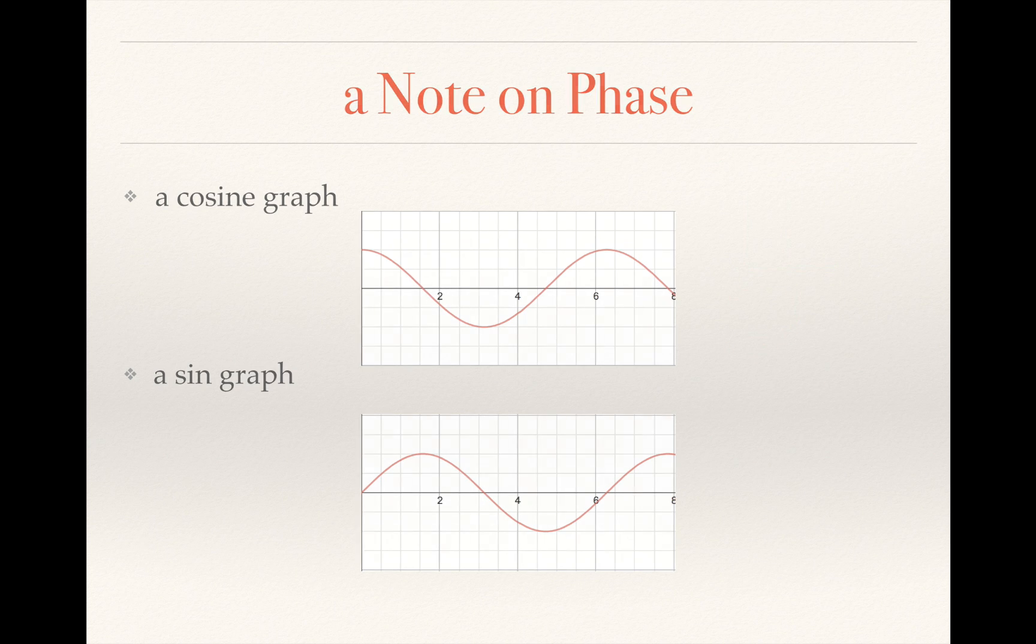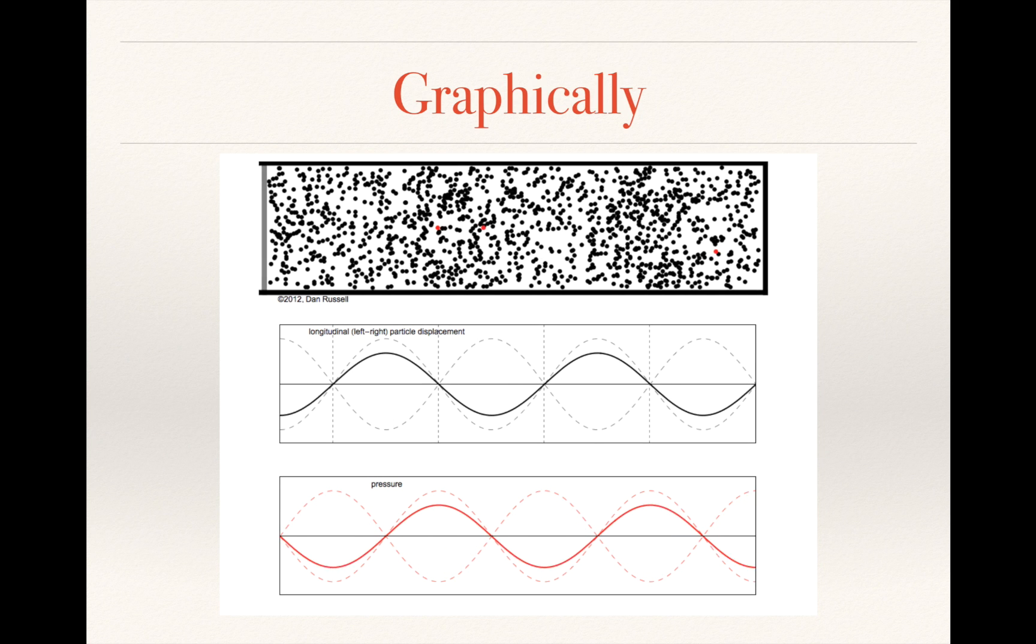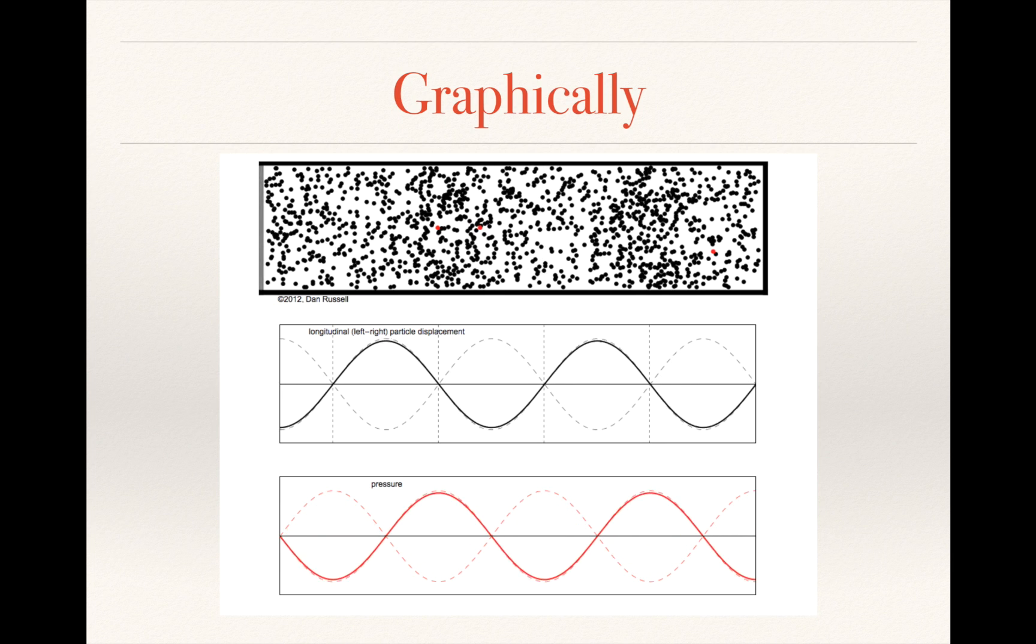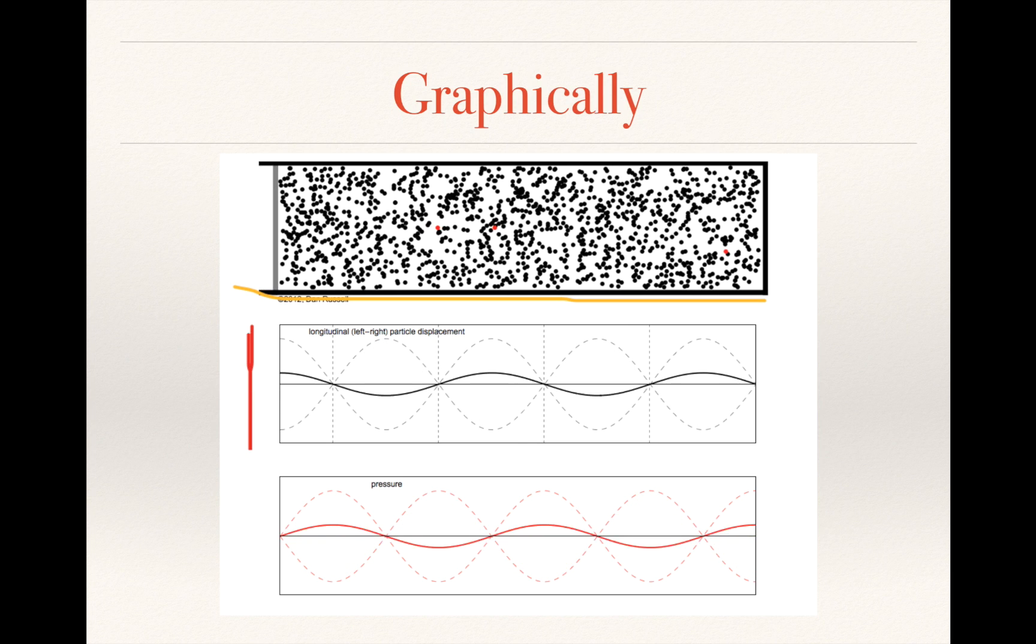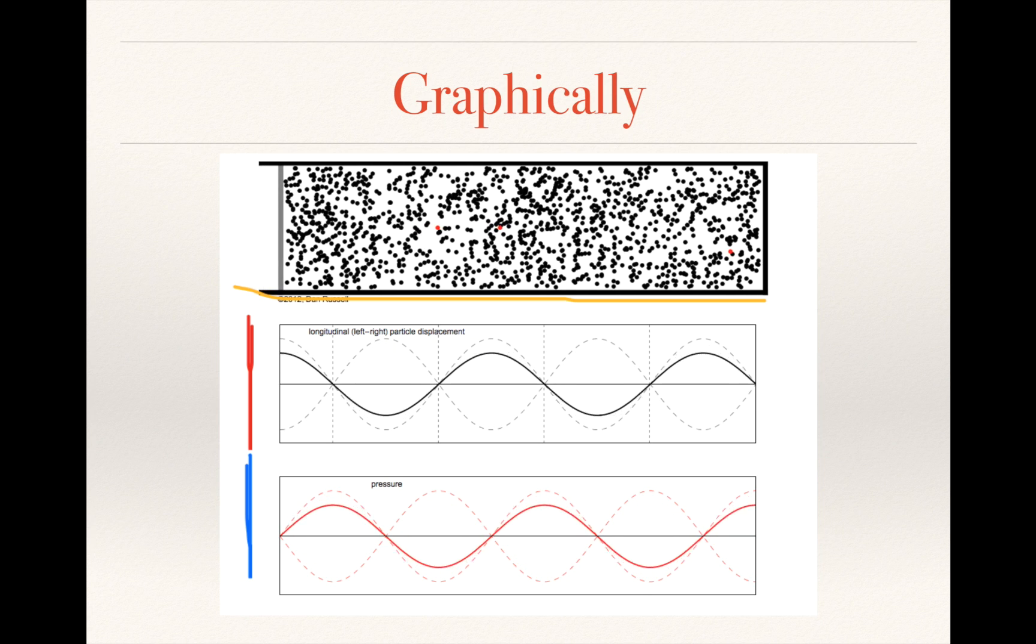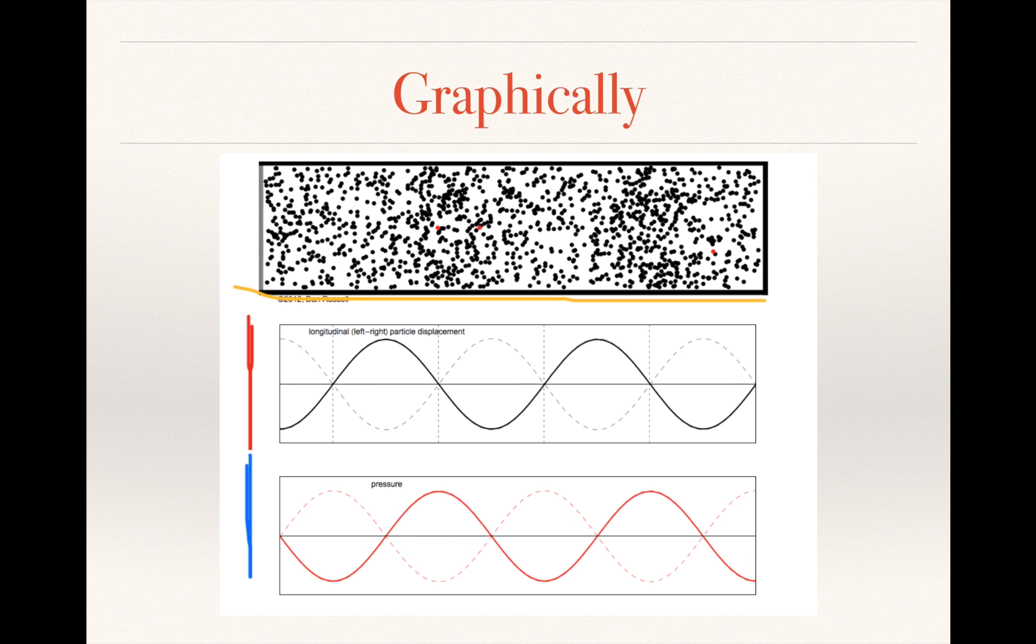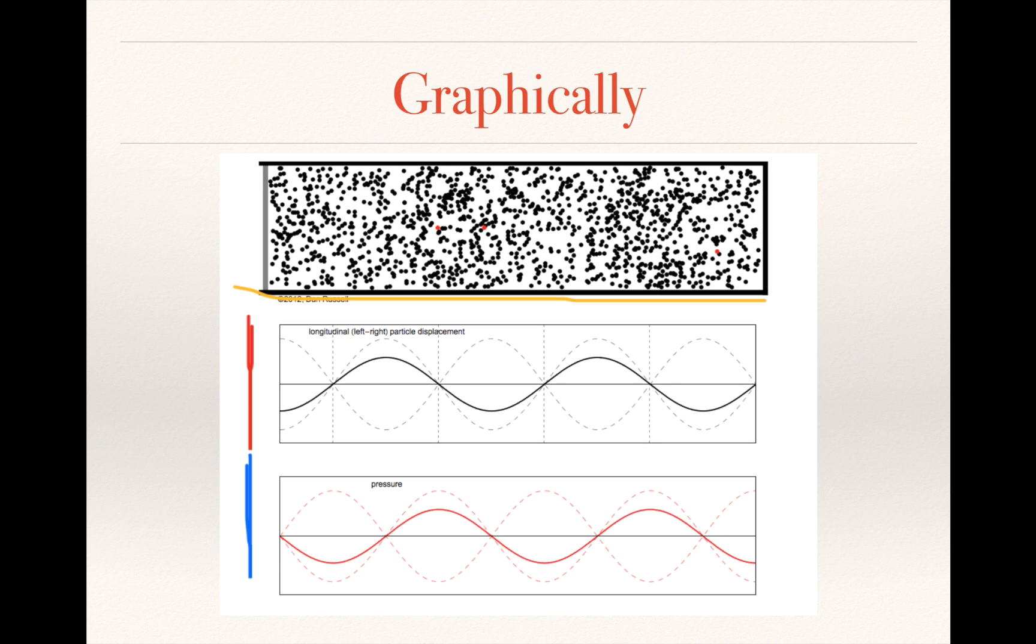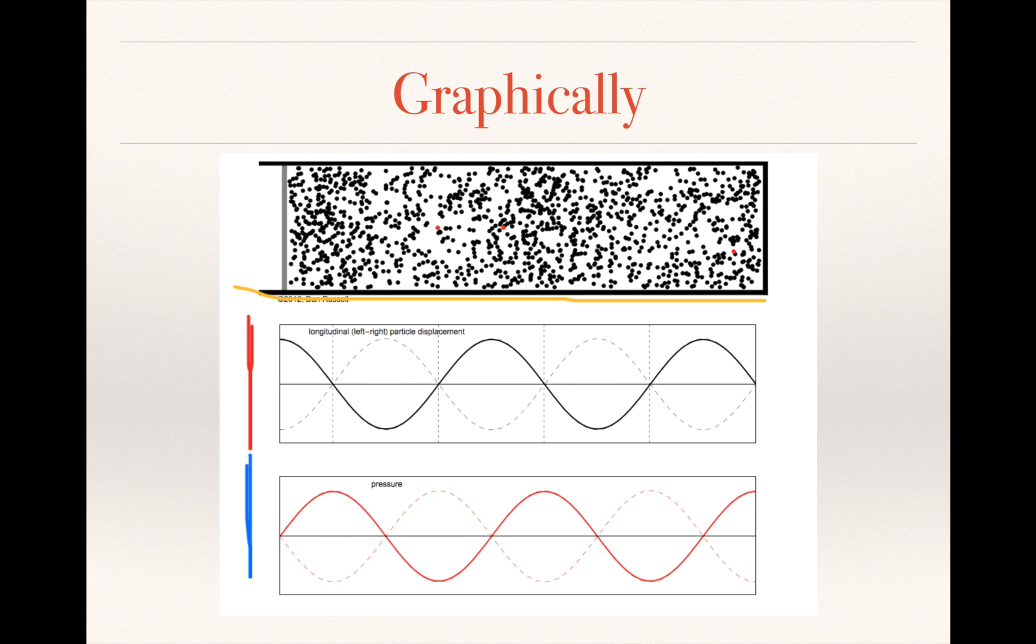So moving on, we have a graphical representation of the whole thing. This demonstrates quite clearly how they all relate to each other. So if I play it, we have at the top right here, we have our longitudinal wave or sound wave, and below that we have our displacement, and below that we have our pressure. Some things to point out and to show is that we can see in the representation of the sound wave right at the very top, we can see regions of denser particles and less dense particles as the wave oscillates. That corresponds to our compressions and rarefactions.